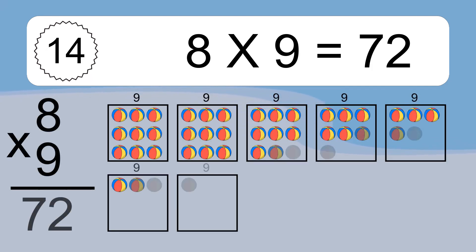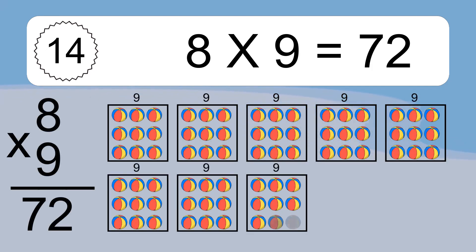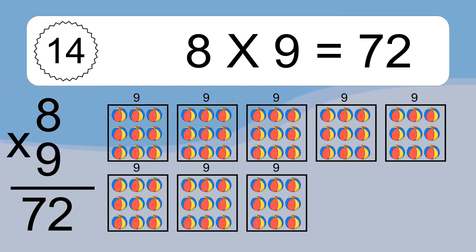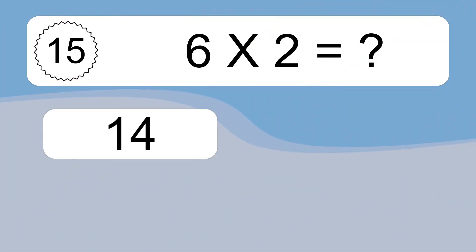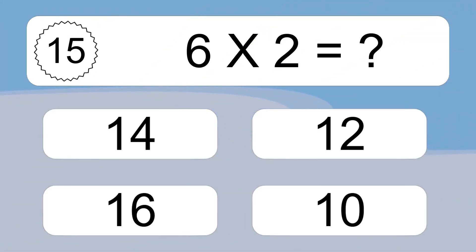8 times 9 equals what? We have 8 boxes and each box has 9 colorful balls inside. If you count all the balls in all the boxes together, you will have 8 times 9 balls. This equals 72 balls.